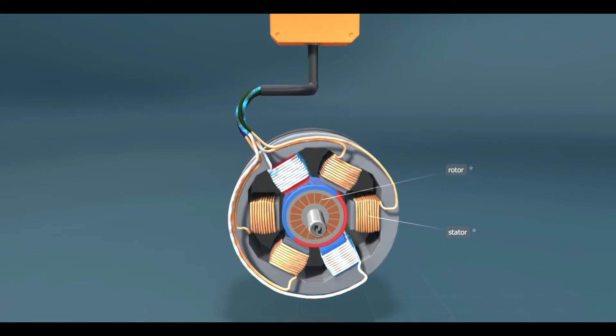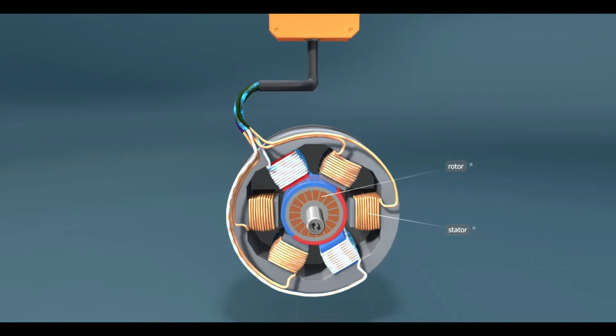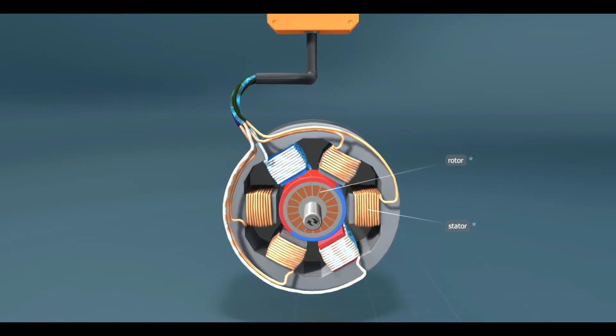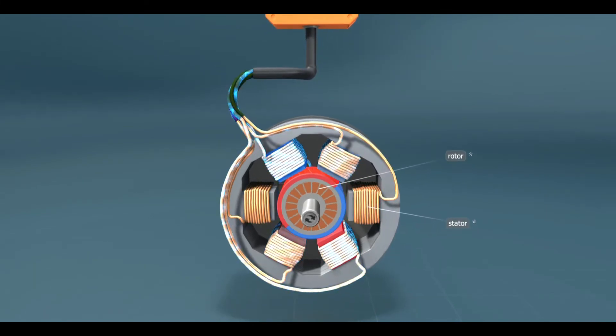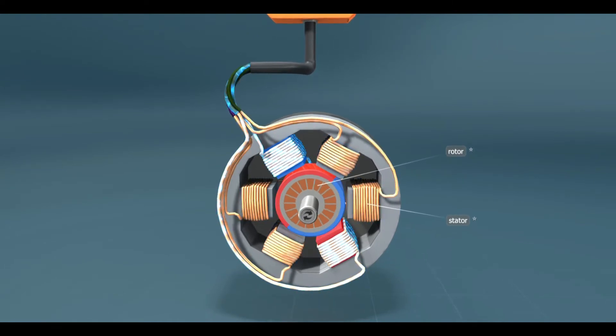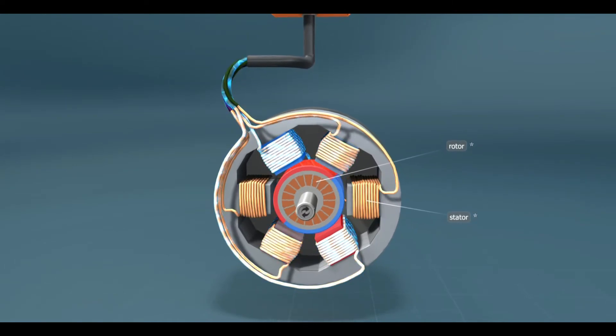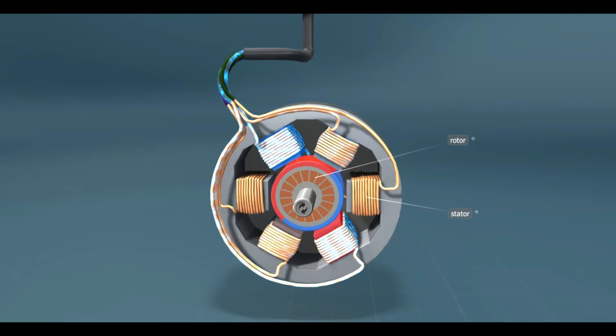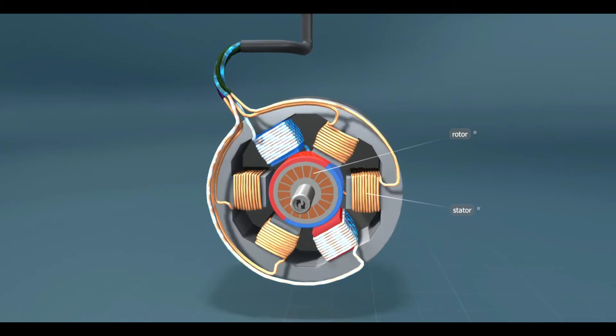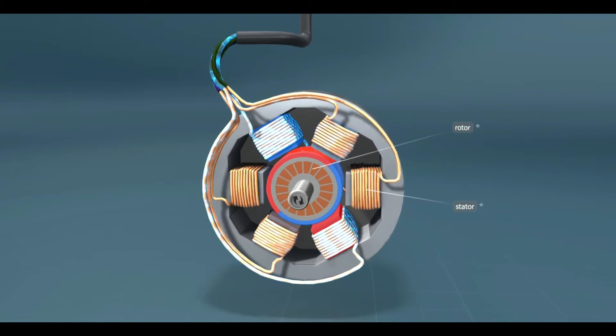The rotor can be a simple metal cylinder, but it is usually a coil that does not receive current from outside. It will be induced in it. The alternating current in the coils of the stator does not flow in the same phase, so a rotating magnetic field is generated around these coils.